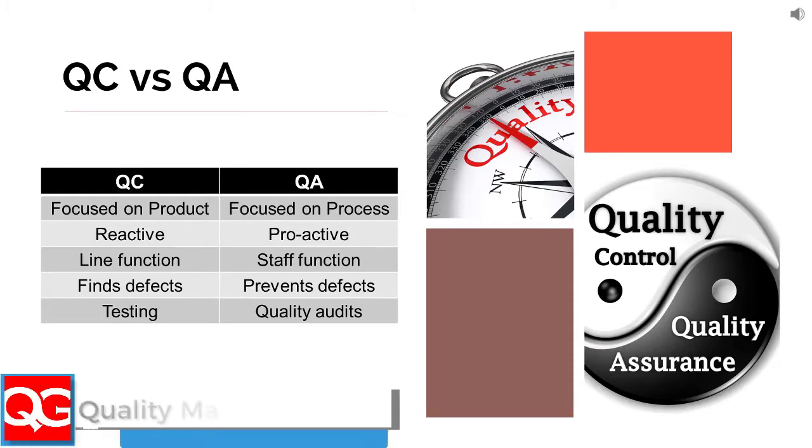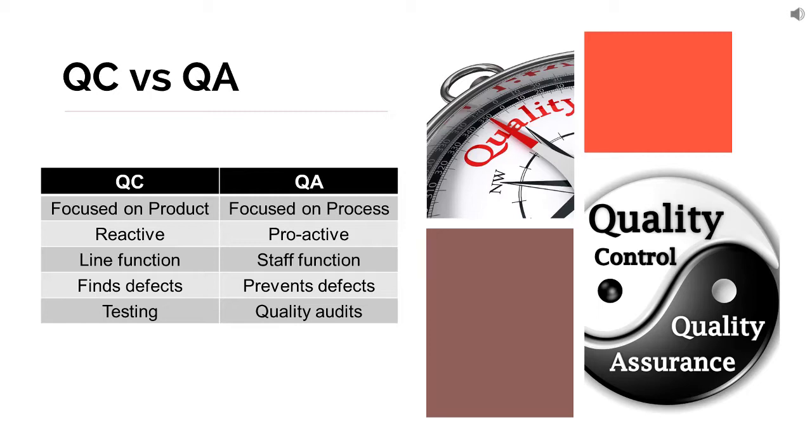Here on this slide, we have the difference between QC, which is quality control, and QA, which is quality assurance. If you look at the first one, the focus of quality control is on the product — that's what we were talking about when we looked at the definition also. The focus was on the product, on getting the right input, on getting the production done right, and on making sure that the finished product meets the requirement.